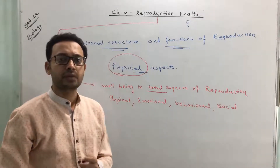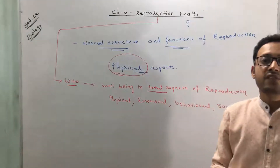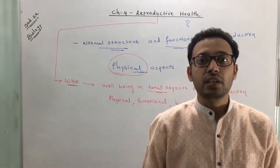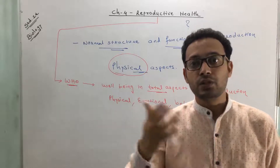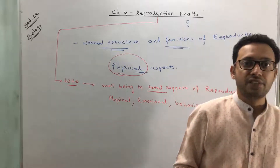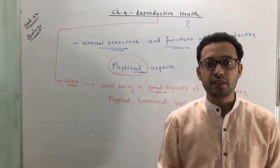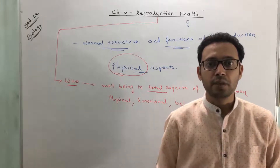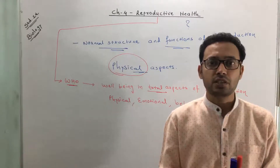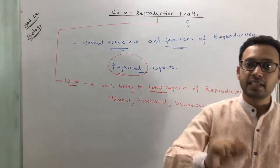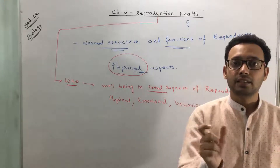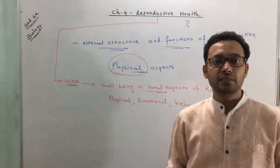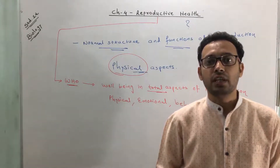For example, there are many persons who are physically fit but suffer from mental disorders — they are considered unhealthy. There are also persons who are physically and mentally fit but have less social interaction; they are introverts. So a person should be healthy in all aspects: physical, mental, and social. That is considered true health.